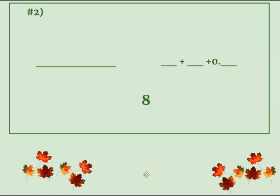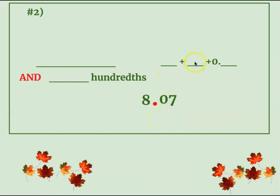Number two — we have eight and seven-hundredths. Go ahead and fill this in how you think it should be, using the little area to help you figure out what goes up there. I gave you a little bit of a hint and you always have the example to refer back to. Eight and seven-hundredths — how would you write it in word form? How would you write it in expanded form?